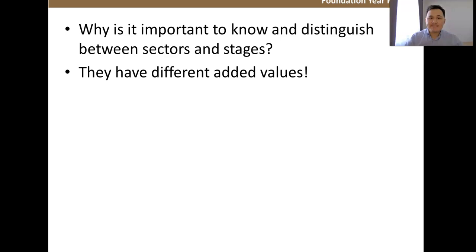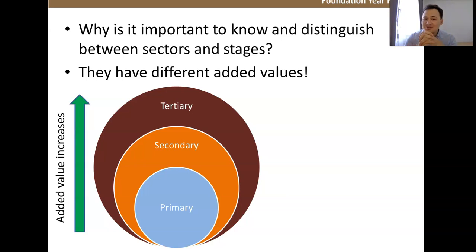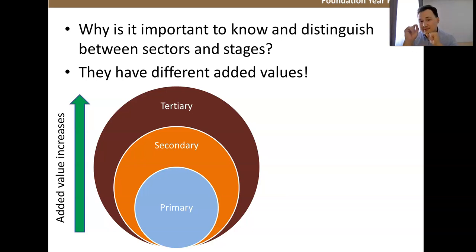These sectors have different added values. Primary sectors tend to have lower profit margins. Secondary sectors tend to add more profit margin. And tertiary sectors, surprisingly, tend to have the largest profit margin — usually, though not always. So why are primary businesses still so big and profitable? Because revenue equals price times volume — these companies produce very large quantities, which is why they have lots of revenue.